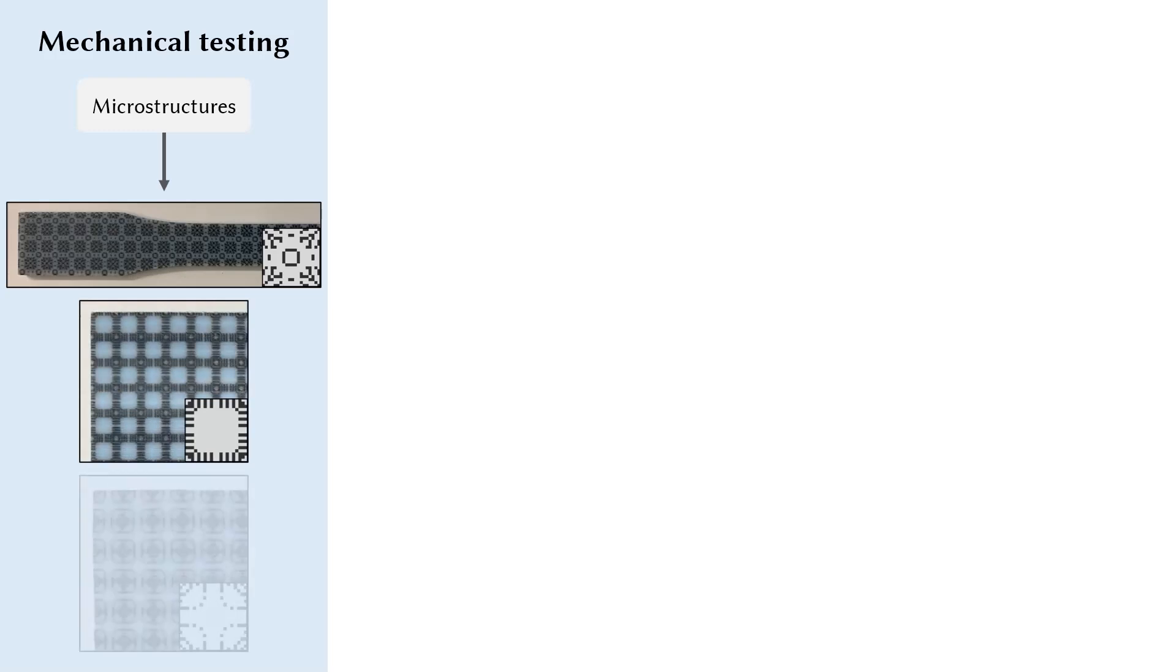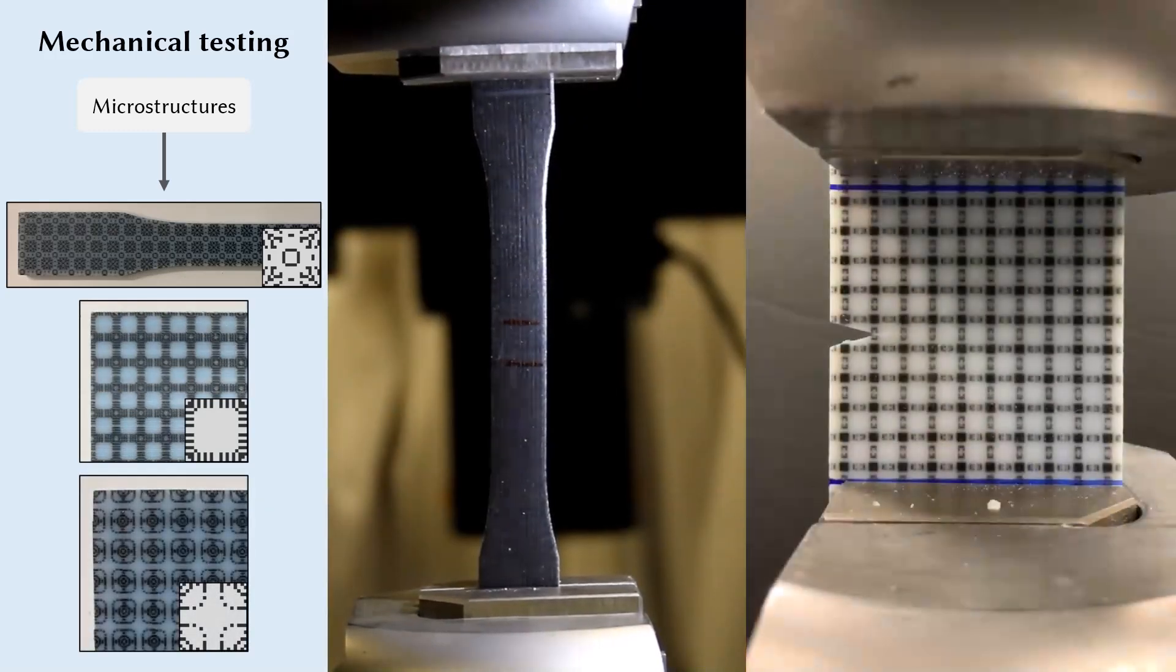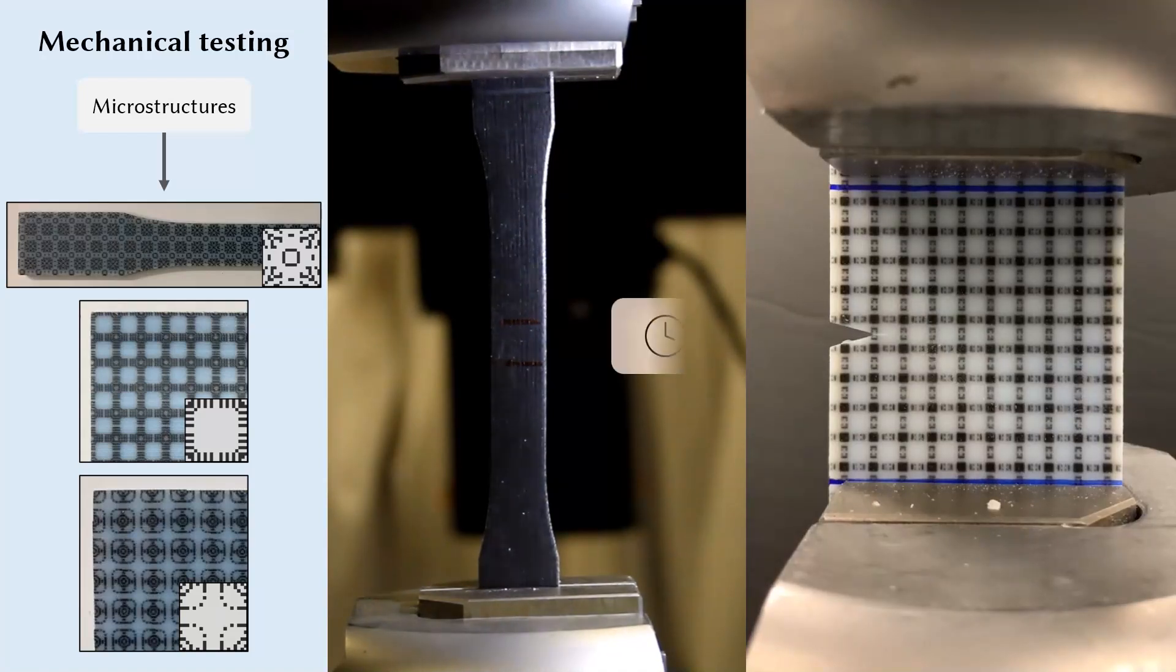To explain how the pipeline functions, let's start with the most essential component, mechanical testing. For each microstructure design that undergoes physical measurements, we fabricate test specimens from 3D printing and collect their stress strain responses on commercial tensile testing equipment. Each measurement will take 2 to 3 hours on average due to the intensive labor involved.